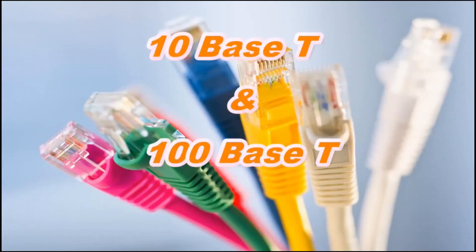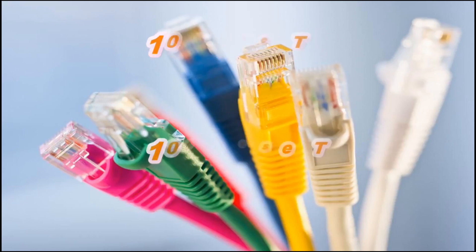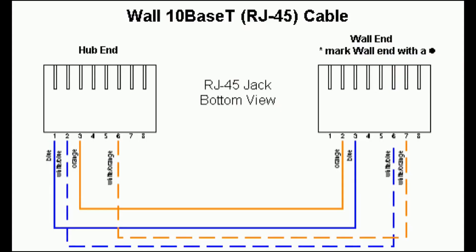Under the 10BaseT and 100BaseT networks, out of these 8 wires, only 4 wires or 2 twisted pairs are used for data communication, and 4 wires remain as spare. While in the case of a 1000BaseT,